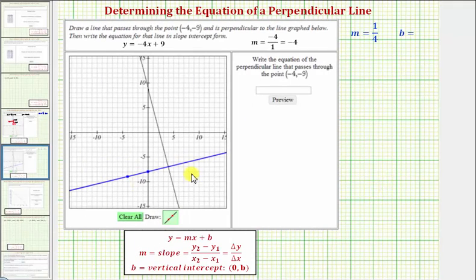Again, by analyzing the blue line, we can determine that the vertical intercept is the point zero comma negative eight, which means b equals negative eight. Therefore the equation of our perpendicular line in slope-intercept form is y equals one fourth x minus eight.